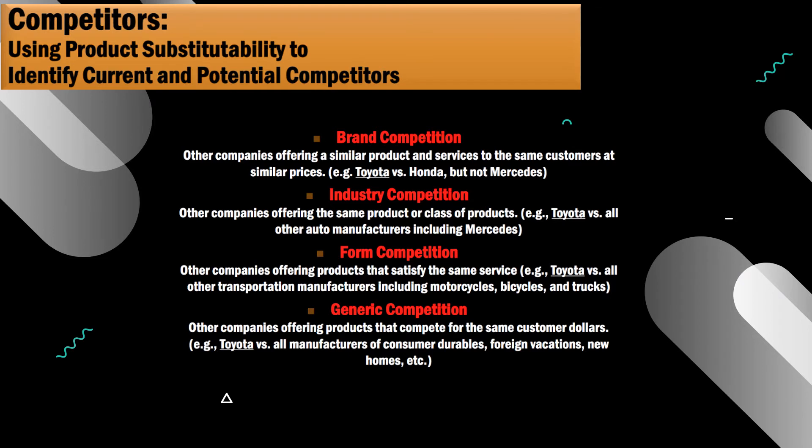Now to shift gears back to discussing the specific types of competition. Brand competition aligns pretty similarly with marketing myopia. For example, if Pepsi and Coke were only competing with each other and no other soda brands — their offerings are very similar, catering to similar customers with a similar product at a similar price.